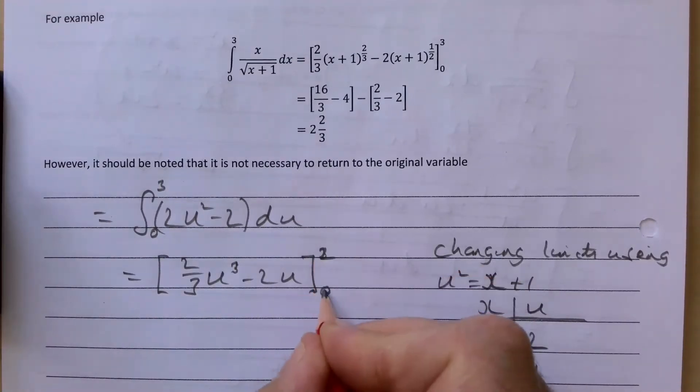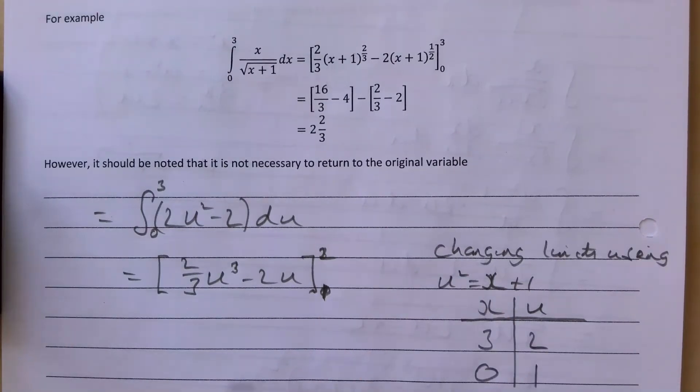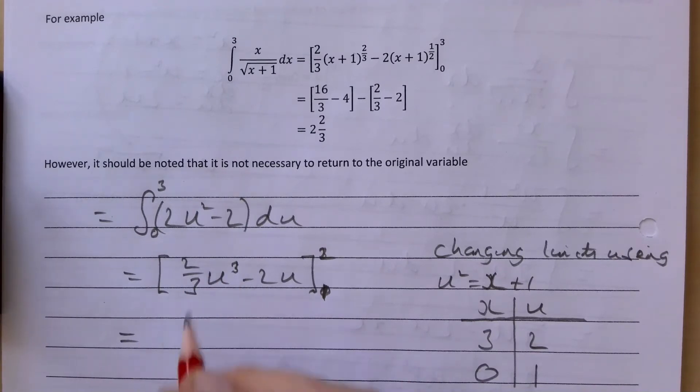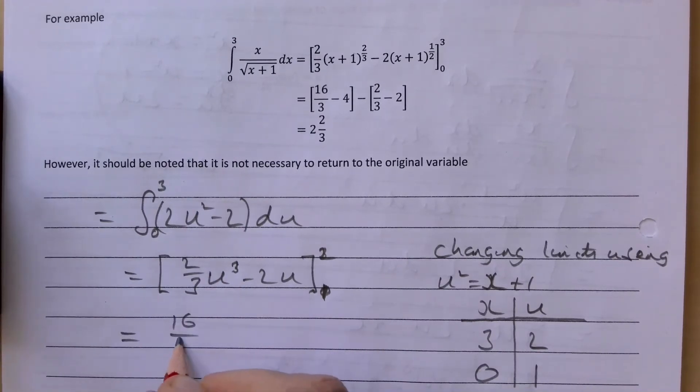We can find the values then for that. So if I sub in 2 into this, 2 cubed of course is 8, so it's going to give us 16 over 3 take away 4.